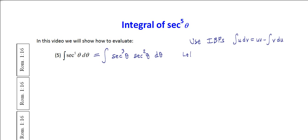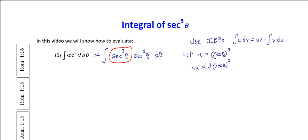We are going to assign u to be the secant cubed — this first part — written as secant of theta cubed. To differentiate that, the three comes out in front, I get secant theta, the power knocks down by one so it becomes squared. Then using the chain rule, the derivative of secant is secant theta times tangent of theta, as we established in the first video.